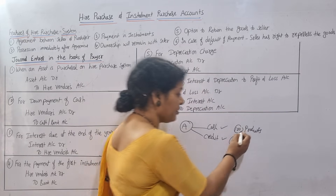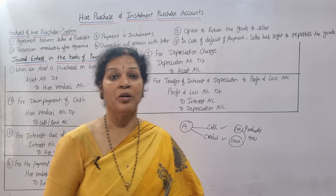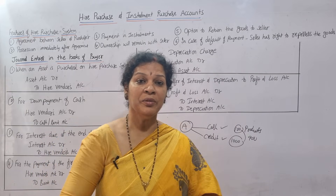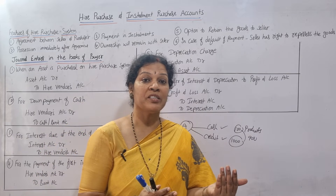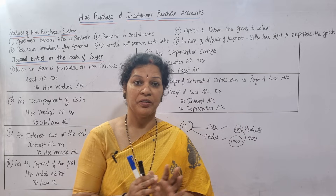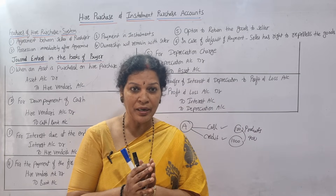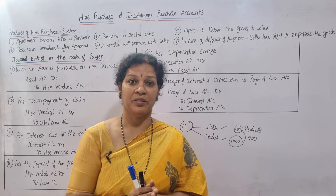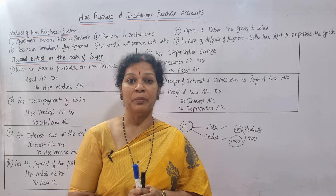This is called the Hire Purchase System. In the Hire Purchase System, the seller does not get the total amount of the product at once. The position of the asset is transferred to the buyer, but payment is made installment-wise — the purchaser makes the payment in installments.